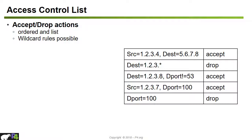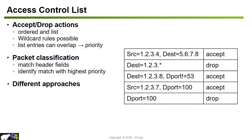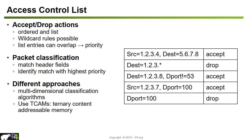Because list entries can easily overlap, we need a priority ordering to determine which action should be triggered when two or more access control list entries match a given packet. This is also done for packet classification — we match header fields and identify the match with the highest priority. To implement this efficiently, one approach is to use multi-dimensional classification algorithms; a more efficient approach is to use ternary content addressable memory (TCAM), a special data structure that can do such match operations very fast.